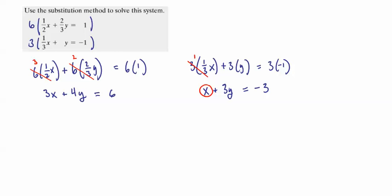So we're going to take that equation and solve it for x. What we need to do first, subtract the 3y, subtract the 3y, and we end up with x is equal to negative 3y minus 3.